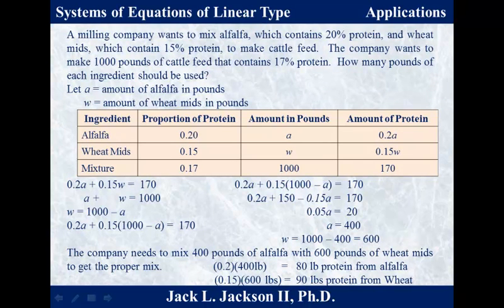The proportion of protein is 0.2 for alfalfa, and A is the amount in pounds, giving 0.2A as the protein from alfalfa. The wheat mids are 0.15 protein, with W as pounds, giving 0.15W as the protein from wheat mids. The desired mixture has 0.17 protein, and we want 1,000 pounds, so 0.17 × 1,000 = 170 pounds of protein total. Amounts add up, giving two equations.